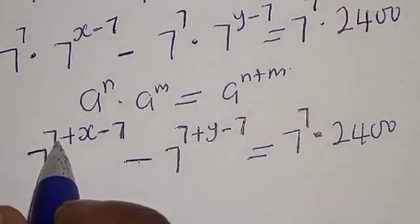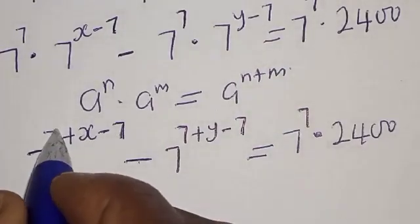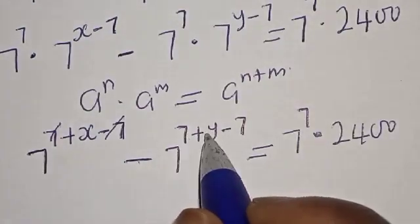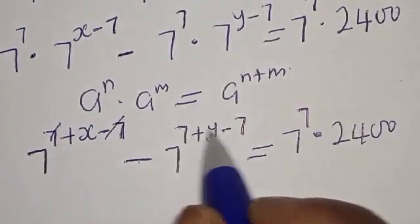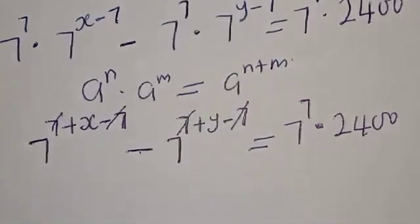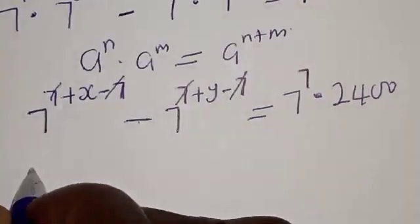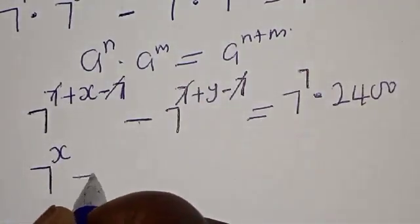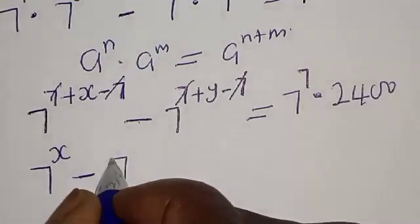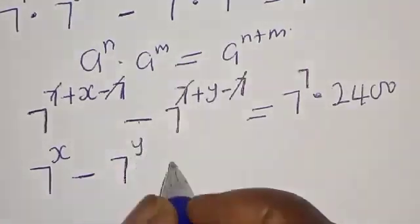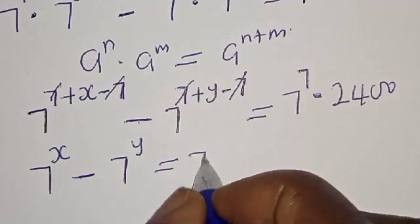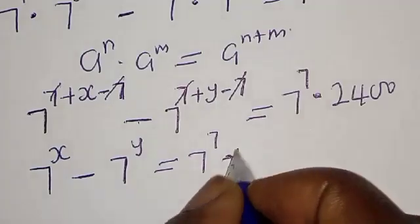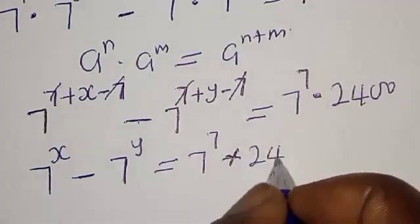Now, 7 plus x minus 7: the 7 and minus 7 will cancel, leaving just x. Similarly, 7 plus y minus 7: those cancel, leaving just y. So we are left with 7 raised to power x minus 7 raised to power y is equal to 7 raised to power 7 multiplied by 2400.